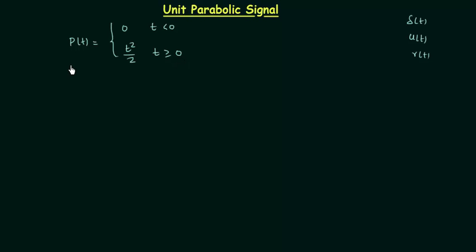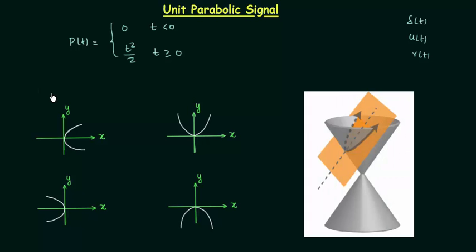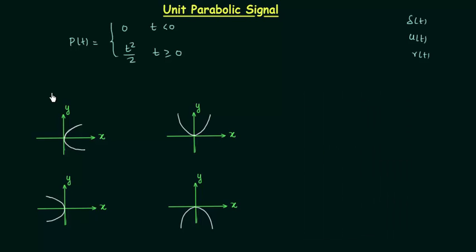Before moving to the waveform of unit parabolic signal, we will see a small introduction of parabolas. A parabola is part of a conic section. When you cut the double right circular cone in a particular manner, you will have a parabola. Now, depending on orientations, we have four different parabolas.